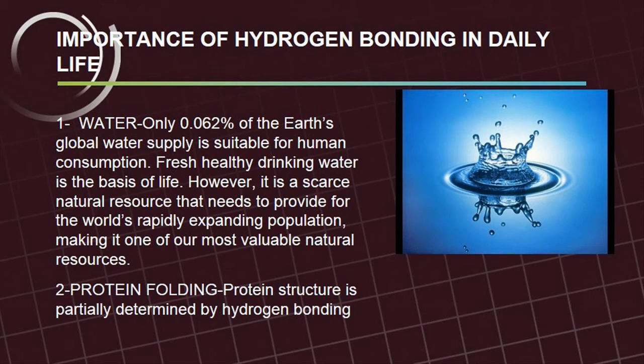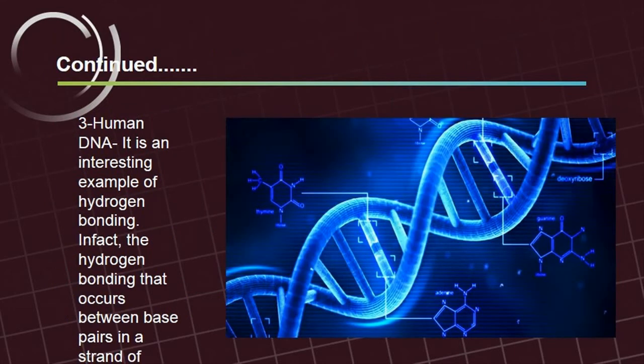Two: protein folding. Protein structure is partially determined by hydrogen bonding. Three: human DNA. It is an interesting example of hydrogen bonding. In fact, the hydrogen bonding that occurs between base pairs in a strand of DNA creates its familiar double.